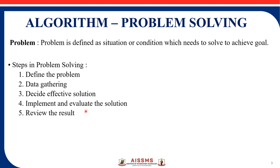The fourth step is to implement and evaluate the solution, and the fifth step is to review the result. For the third step — deciding the effective solution — there can be N number of solutions for a particular problem. We need to decide which one is effective based on time and space complexity. The fourth step is implementation, meaning writing the code, and evaluation. The last step, reviewing the result, is nothing but achieving the goal.